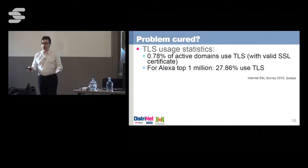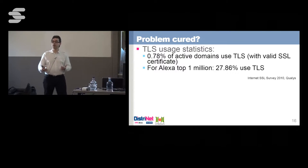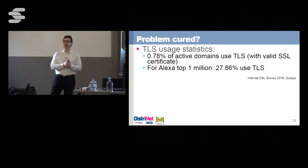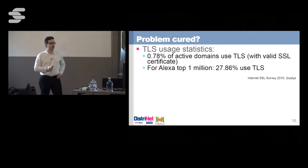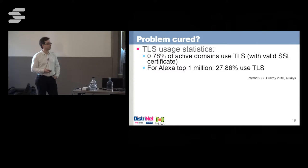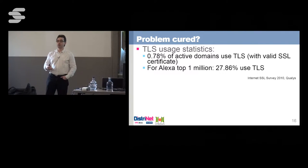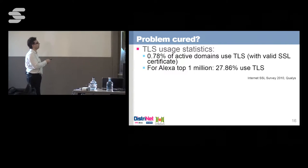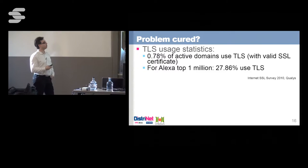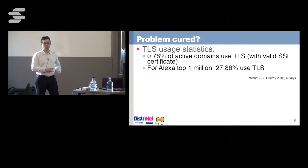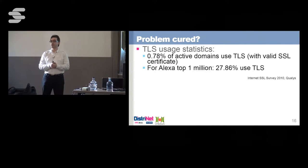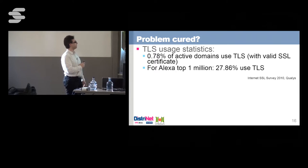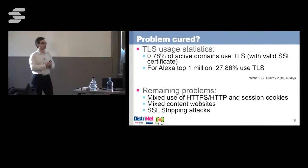But is the problem cured? Yes and no. TLS already provides better protection against eavesdroppers stealing session identifiers or modifying webpages and scripts on the client side. But the adoption rate of TLS is quite low — these figures are from Qualys in 2010, and while it has increased a little, it's still way too low. Only less than one percent of active domains were using TLS; for the most popular websites it was around one quarter to one third. Even if you're using TLS, there are still problems remaining.